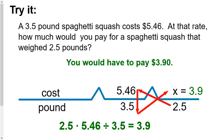If you've solved this correctly, you should get that you would have to pay $3.90. Again, the two things being compared are the cost and the pounds. It's $5.46 for 3.5 pounds. We want to know how much money for 2.5 pounds. For this one, it's going to be far easier to cross multiply and then divide than to try to find a scale factor. There's no easy scale factor to multiply 3.5 by to get 2.5.